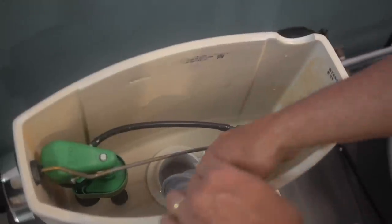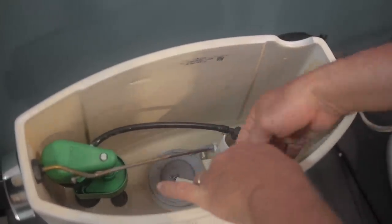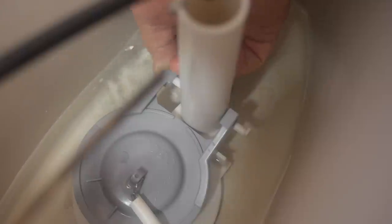To install the new flapper, attach the mounting arms one side at a time to the mounting posts on each side of the flush valve.